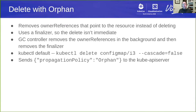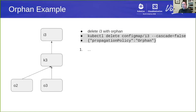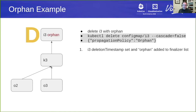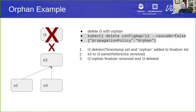Another option for deletion is to orphan it. Resources are going to be deleted, but instead of cascading through garbage collection and deleting the children, it simply removes the owner references to the children. This is something you might do if you want to replace a parent — for example, if there's an immutable field you need to change, requiring delete and recreate, but you don't want to cascade through everything. To do this, you would do 'kubectl delete' with 'cascade=false', which sends a propagation policy of orphan. The same example with orphan policy: i3 is marked for deletion with a deletion timestamp set and an orphan finalizer added. The GC controller notices, finds the children, and removes their owner references. Once the owner reference is removed, the orphan finalizer is removed and i3 is deleted. We end up with k3 still intact and now we can recreate i3 and relink it.